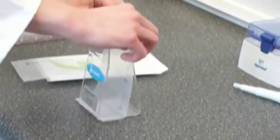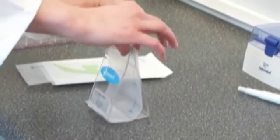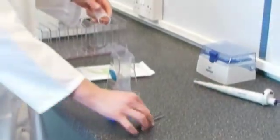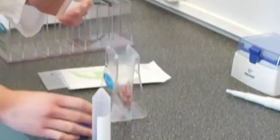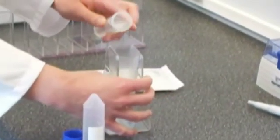The Stomacher 80 Biomaster is ideal for small samples and tissue processing. It is capable of processing samples from 5 to 80 millilitres. A wide range of Stomacher 80 bags and accessories are also available.